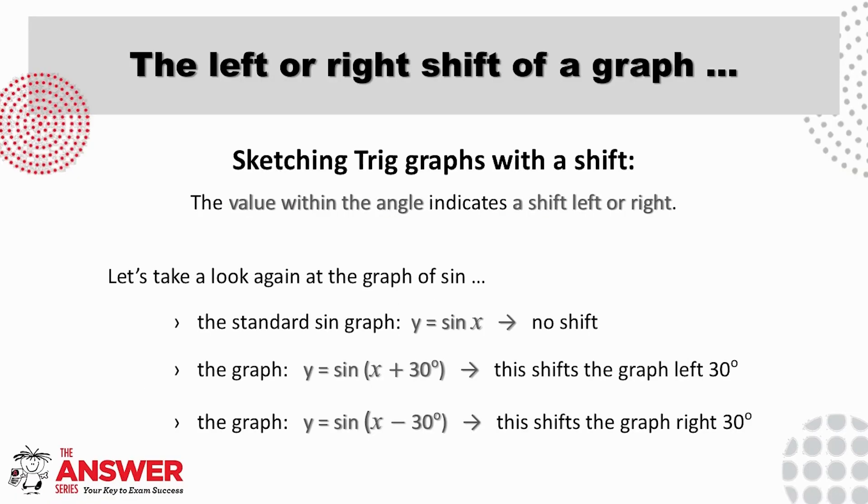If we look now at the left and right shift, here the change in the equation happens within the angle. In other words, if something is being added or subtracted to the x in the angle, then the starting point of the graph will be different. The new beginning can be established by finding which value of x would make this bracket zero. This particular value of x will then give us our new starting point.